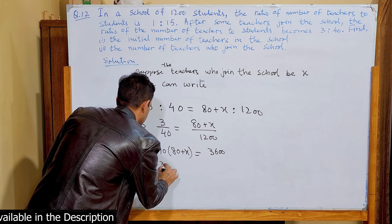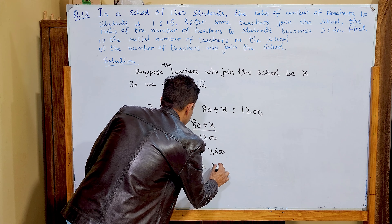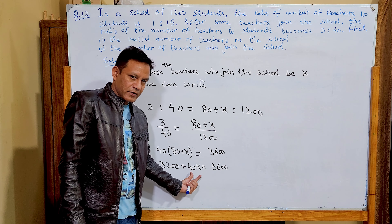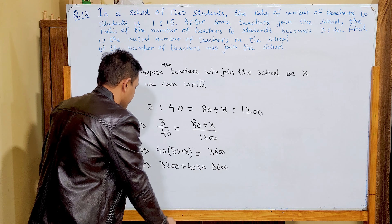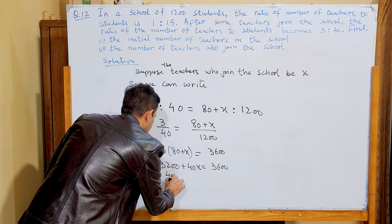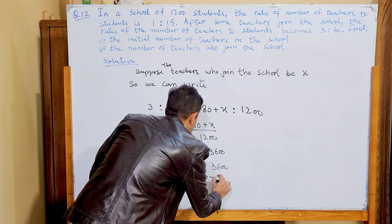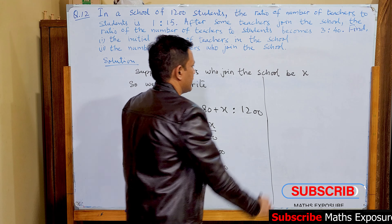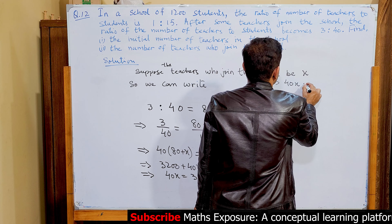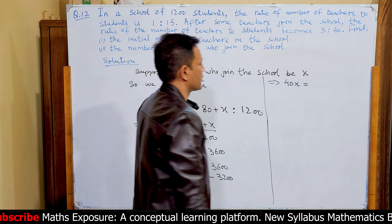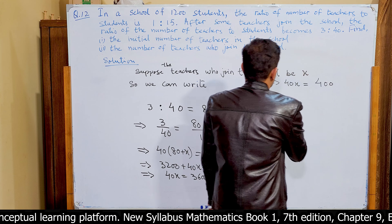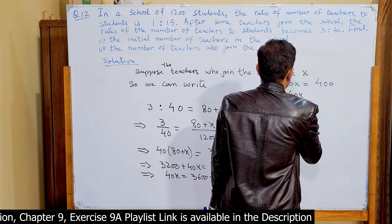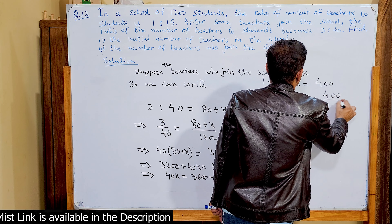Expanding: 3200 + 40x = 3600. We move 3200 to the right-hand side, which becomes negative: 40x = 3600 − 3200 = 400. Dividing both sides by 40: 40x/40 = 400/40.